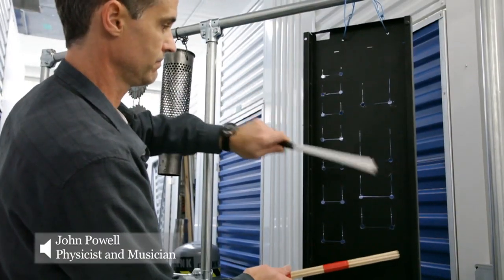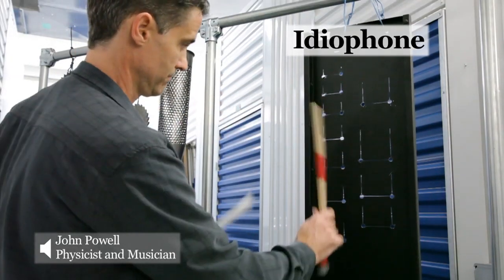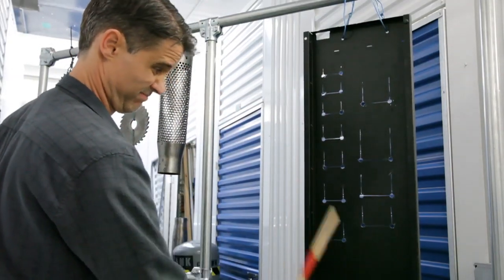What your friends made here is something called an idiophone, and you have to be careful how you say that. There's no T in idiophone. Basically, it's a tuned percussion instrument. Hi there, I'm Dr. John Powell, the author of How Music Works, a book which explains how music works.